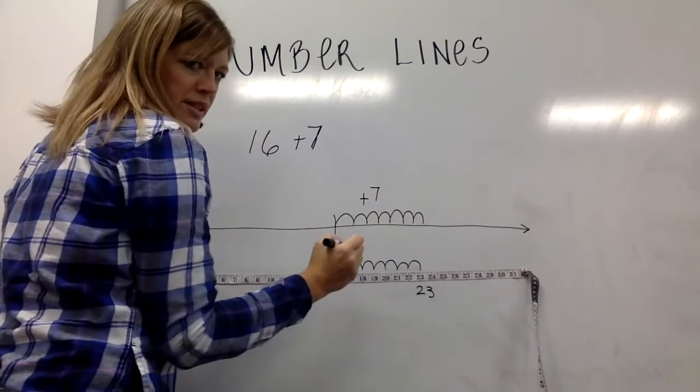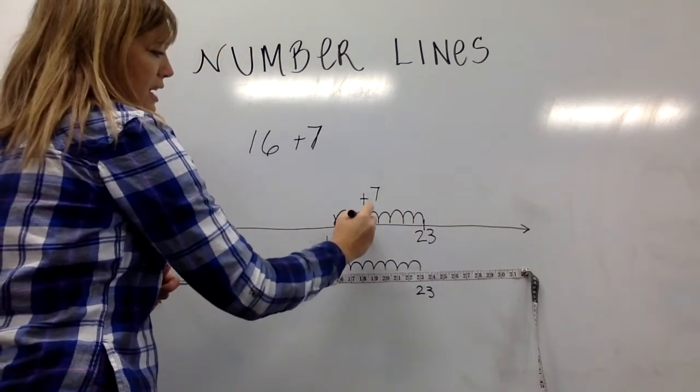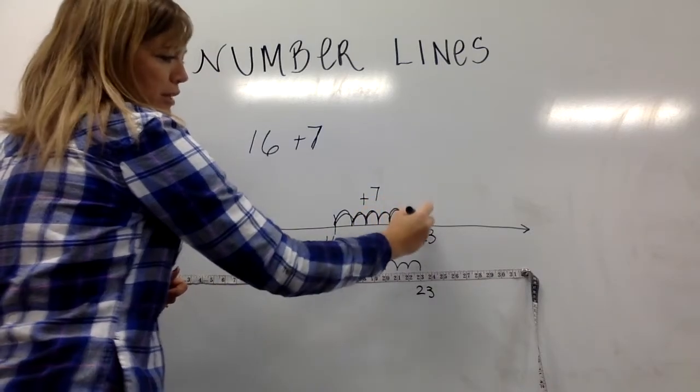Seven more jumps and I'm at 23. And our students would count: 17, 18, 19, 20, 21, 22, 23.